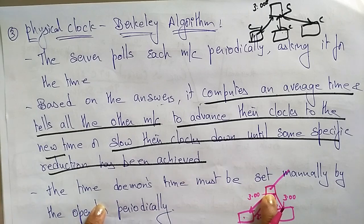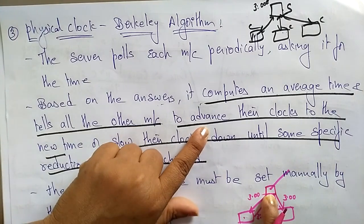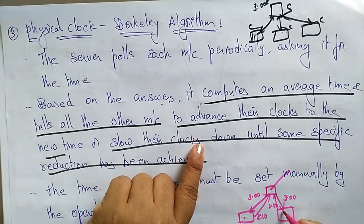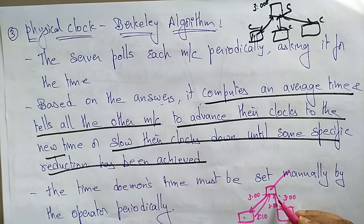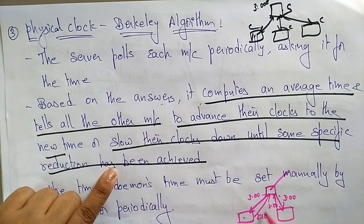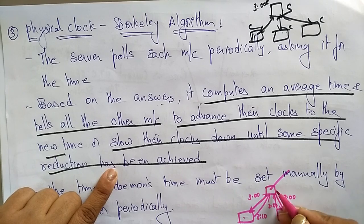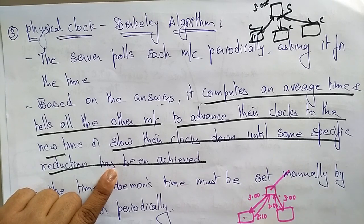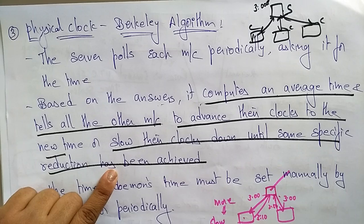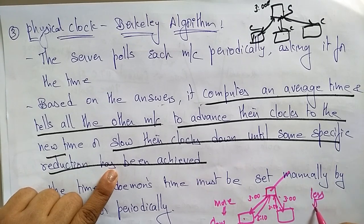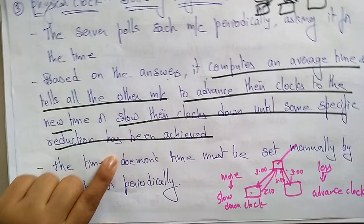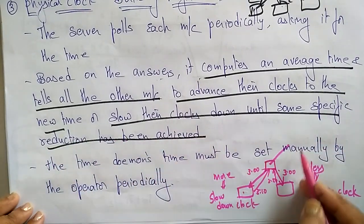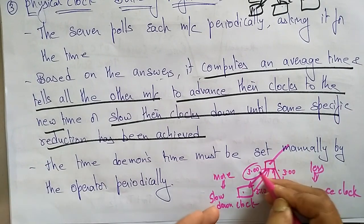The server computes the average time and tells all other machines to advance their clocks. It tells one machine to advance because its time is 2:50 while the server is at 3:00 — so add 10 minutes to make it 3:00. It tells the other machine to slow down because its time is 3:10. So: if a machine is ahead, slow down the clock; if behind, advance the clock.